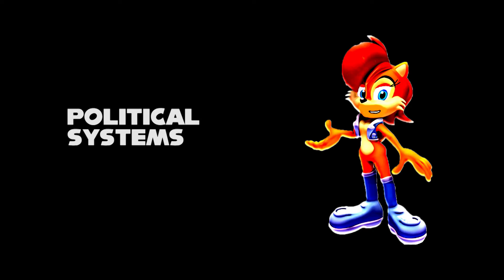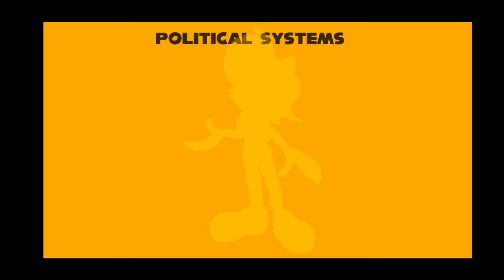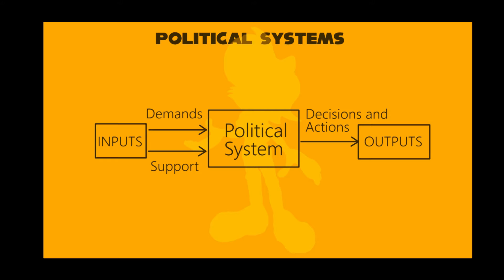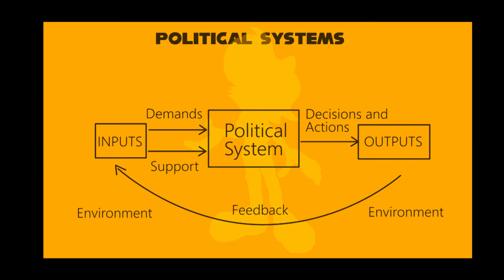Hello, I'm Princess Sally Acorn. We will learn about political systems. A political system defines the process for making official government decisions. It is usually compared to the legal system, economic system, cultural system, and other social systems.